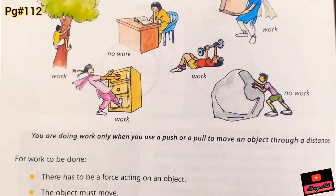Now we will study about work. What is work? You are doing work only when you use a push or pull to move an object through a distance. For work to be done, there has to be a force acting on an object and the object must move as well. If the object is not moving, you are not doing work. Work is equal to force multiplied by distance.